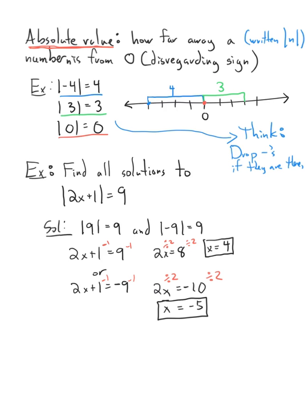So there are the two solutions: either x is four, and two x plus one equals nine with absolute value nine, or x equals negative five, and two x plus one equals negative nine with absolute value nine. What if this was the absolute value of two x plus one equals negative nine? How many solutions would this equation have now? Pause the video and think about that for a second.